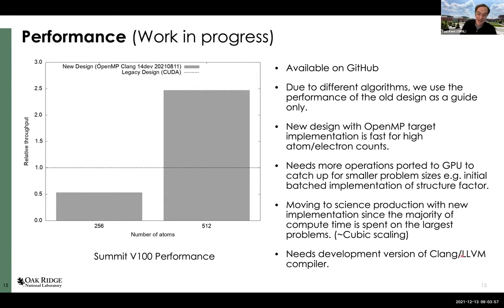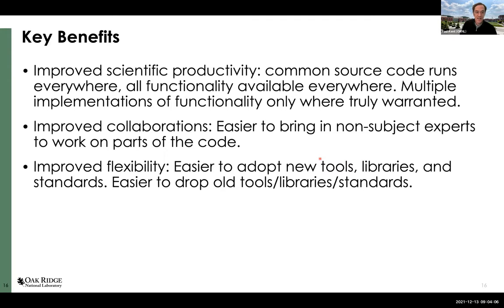Why are we going through all of this besides straight performance? We're here to do science, and we're hoping this unlocks improved scientific productivity. If we have a common source code that can run everywhere without too much effort, that lets us get on with our science and do later optimization as warranted. With the improved architecture and testing, it's easier to bring in someone working at a particular supercomputer center to do custom optimization, because we have a much cleaner design and separation of concerns. And because of that separation of concerns, it's easier to add and subtract different tools — including removing older things as part of maintaining the health of the application.